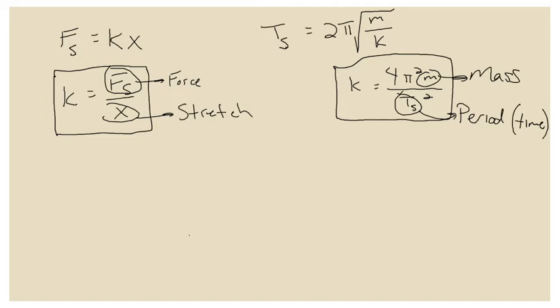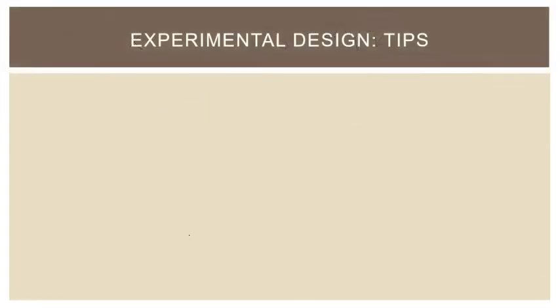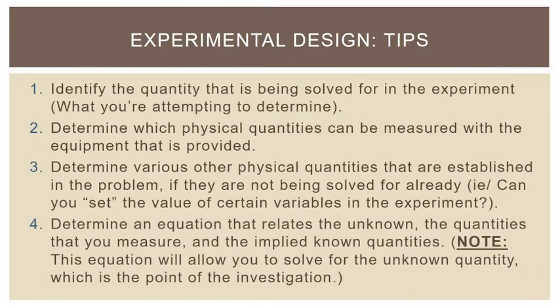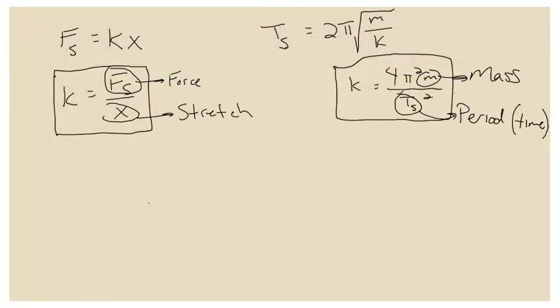The idea is: figure out what they're asking you to measure — the spring constant — then think about all the equations you know for it. Based on the equipment given, figure out what you can actually measure, and choose which equation works best. For example, if you have a force meter, a meter stick, and a stopwatch but no triple beam balance, you can't measure the mass, so the period equation is out. Conversely, without a meter stick you can't measure the spring stretch, so the force equation would be out.